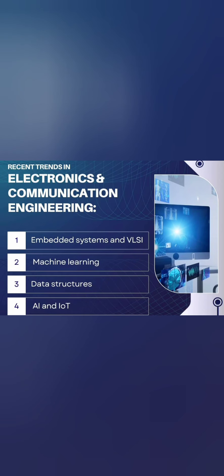Out of those 10 to 12 areas in ECE, there are four areas growing very rapidly. First is embedded systems and VLSI, which is one of the most growing. Second is machine learning, which is also part of CSC specializations. Third is data structures, also part of CSC specialization. And fourth is artificial intelligence and IoT. These four are the most fast-growing areas right now.